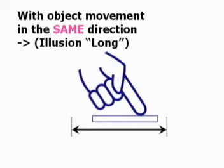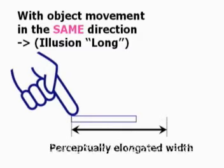If the object moves in the same direction as the hand, the width of the object is perceived to elongate.